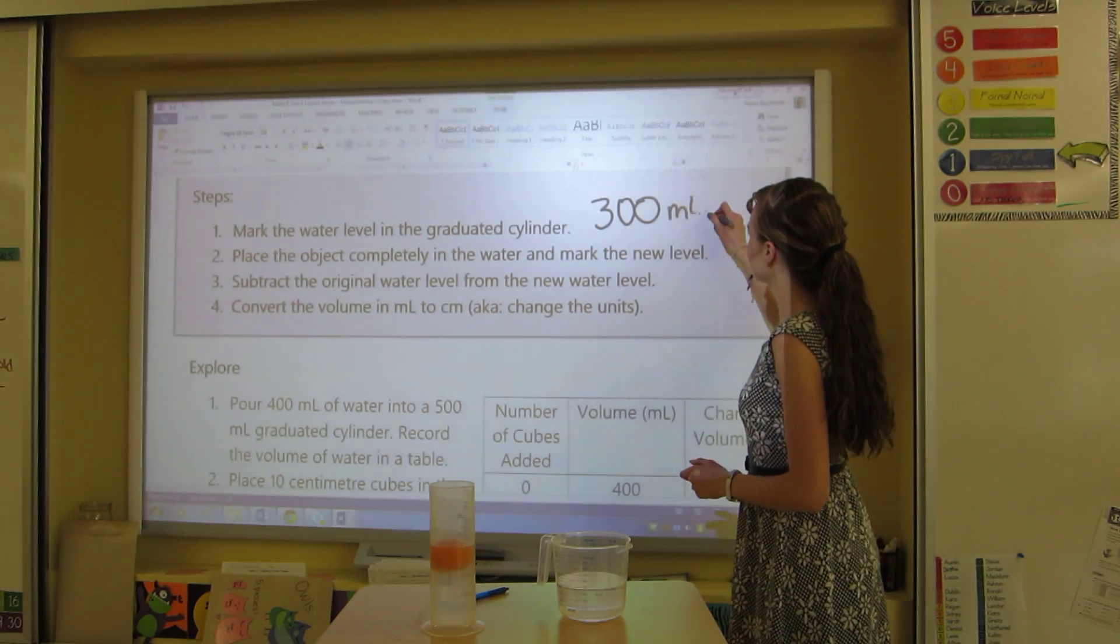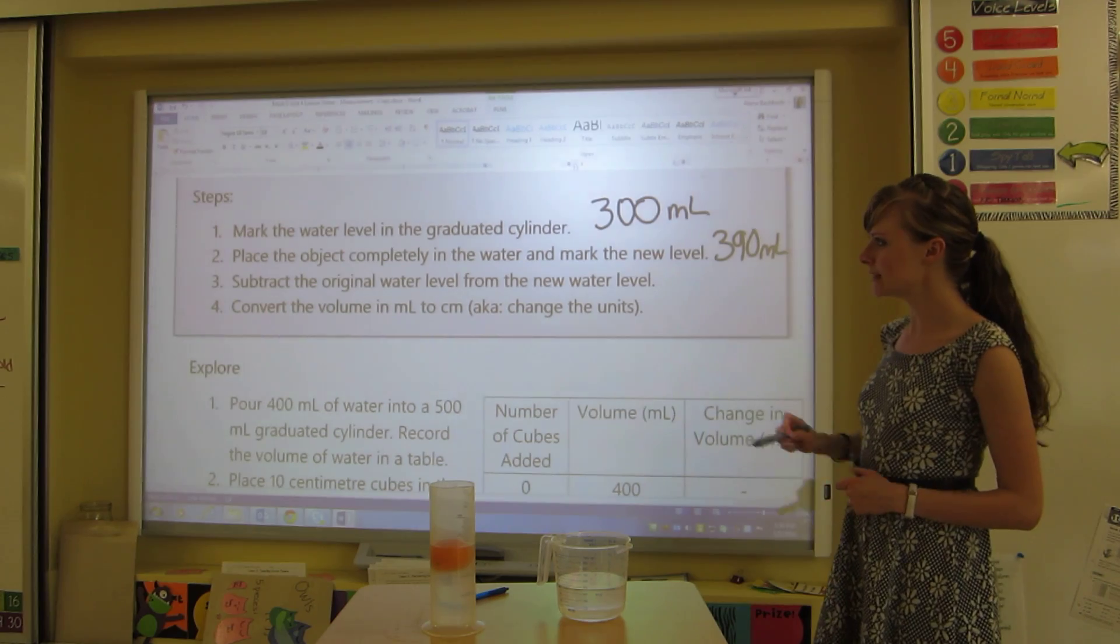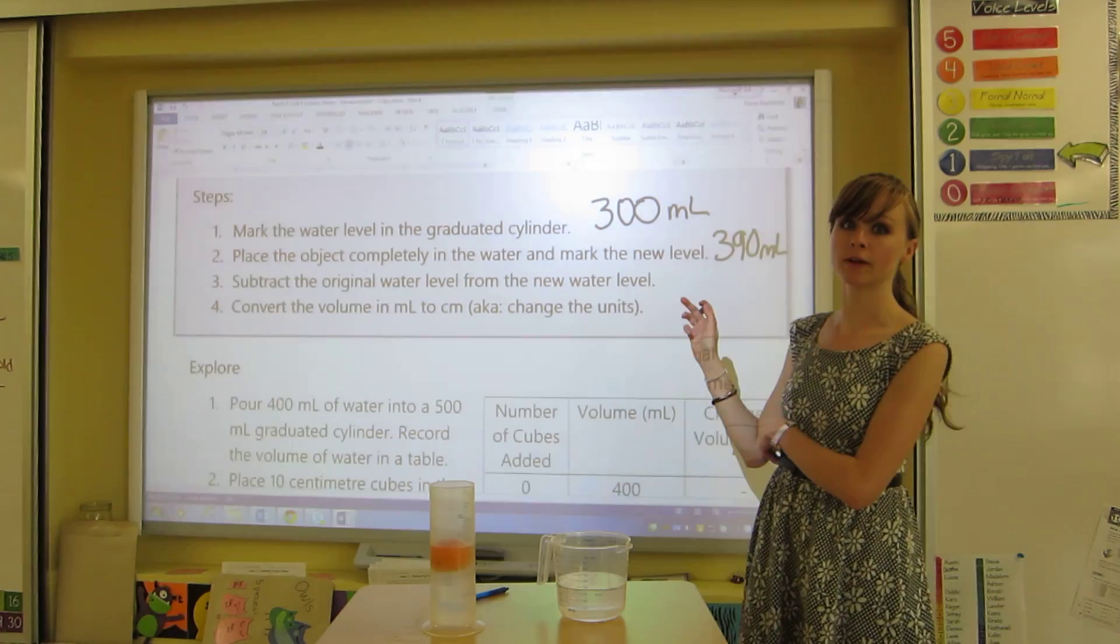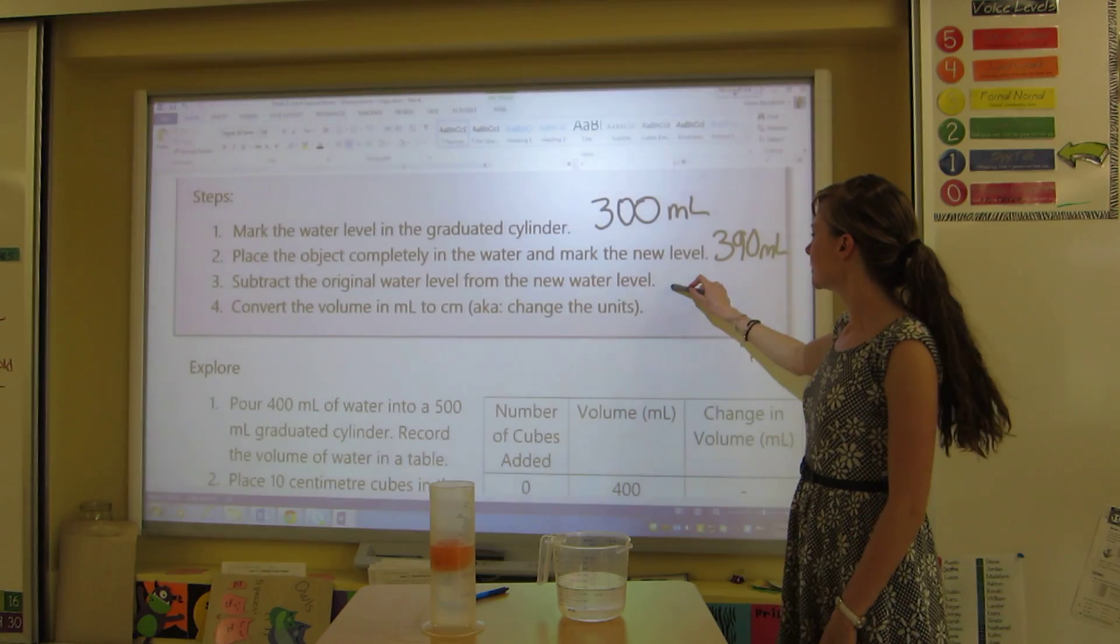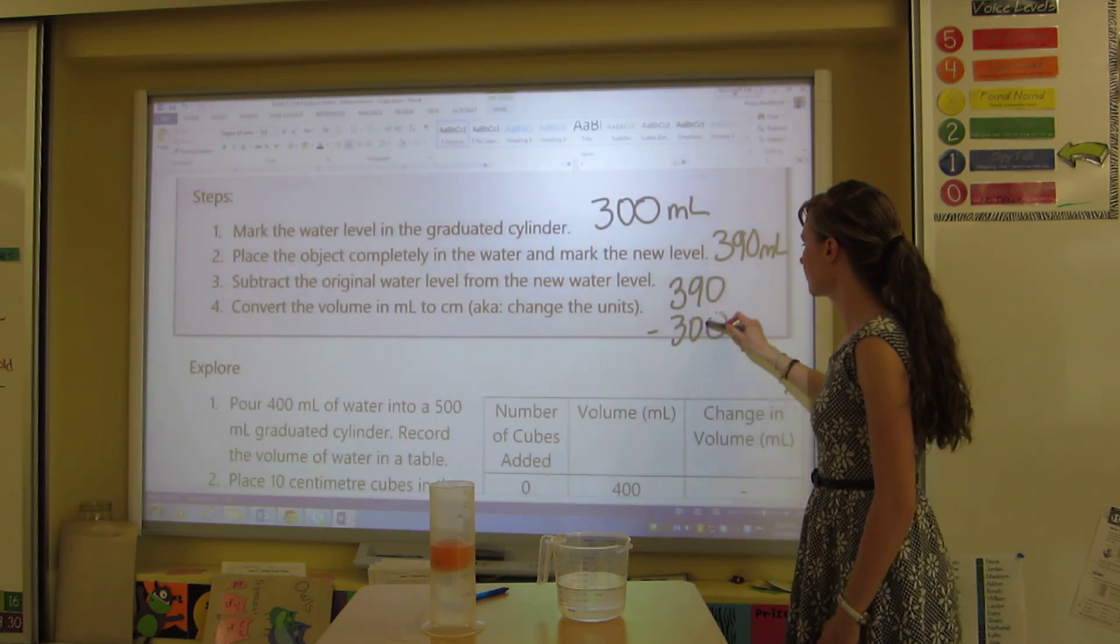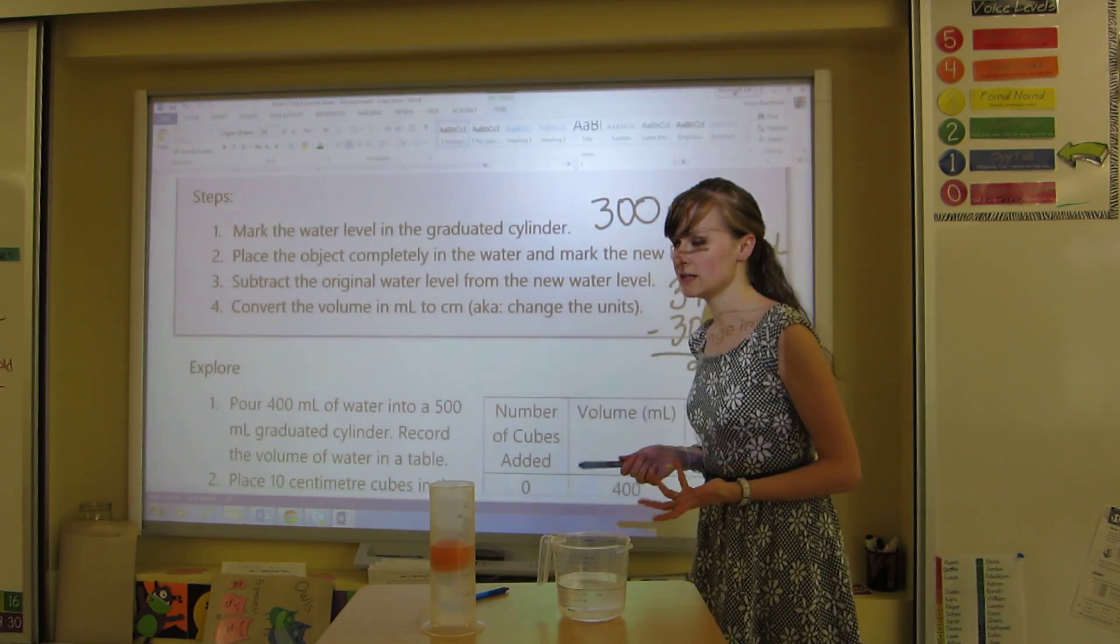So this was 390 milliliters. Now, I need to subtract the original water level from the new water level. So the little number from the big number. So I'll go 390 minus 300, and you probably didn't have to write this one on top of the other, but I get 90.